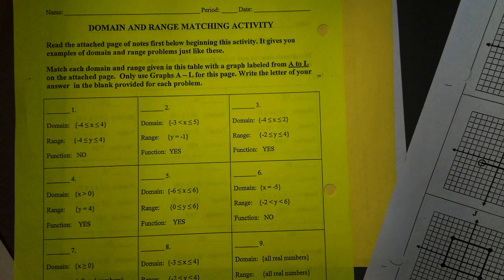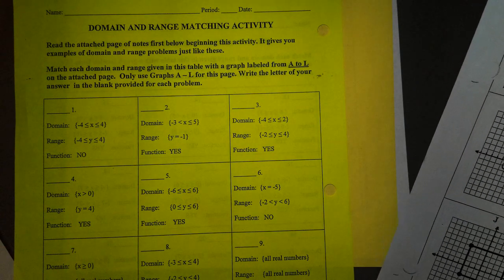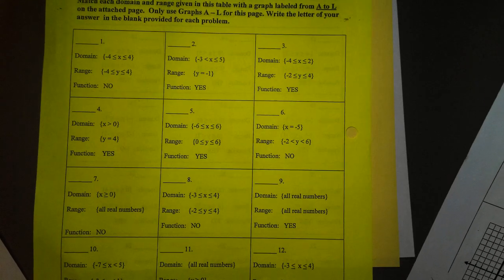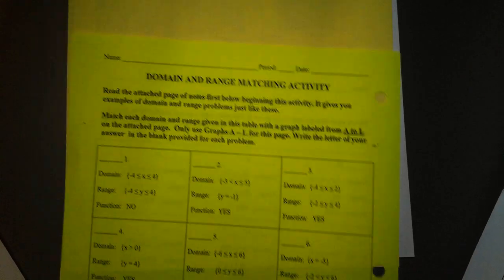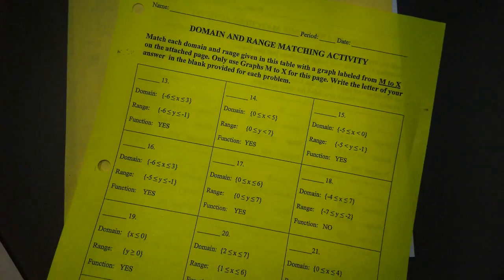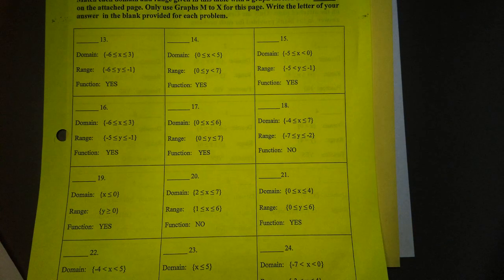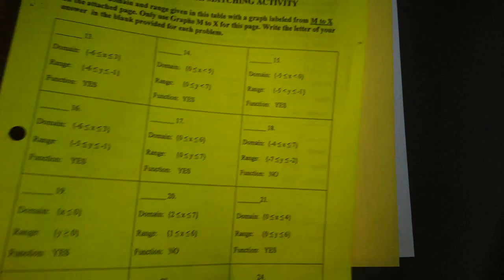The first says domain and range matching activity and on one side it's got 1 through 12 and it goes from A through L, and on the back side it's got 13 through 24 and it goes through M through X.